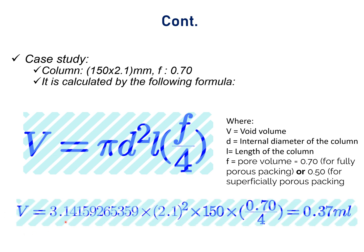Void volume will be 0.37 ml, where 3.1459 is pi, 2.1 is the diameter of the HPLC column, 150 is the length of the column, and 0.70 is the pore volume. Now, void volume is 0.37 after calculation using this formula. Now you can easily calculate void volume of any HPLC column in HPLC analysis or during method development.